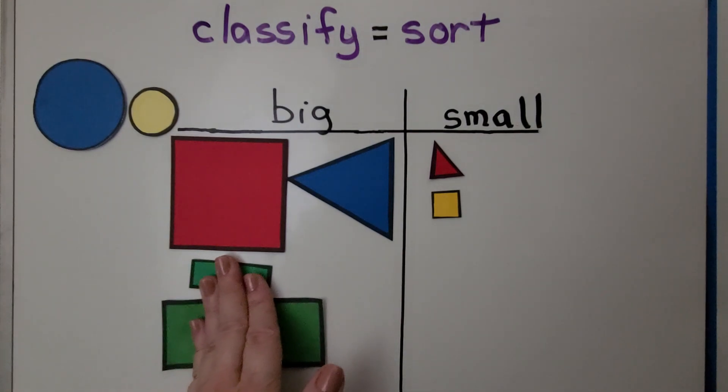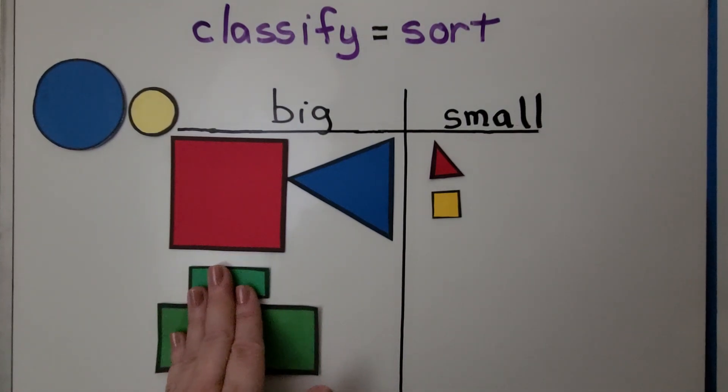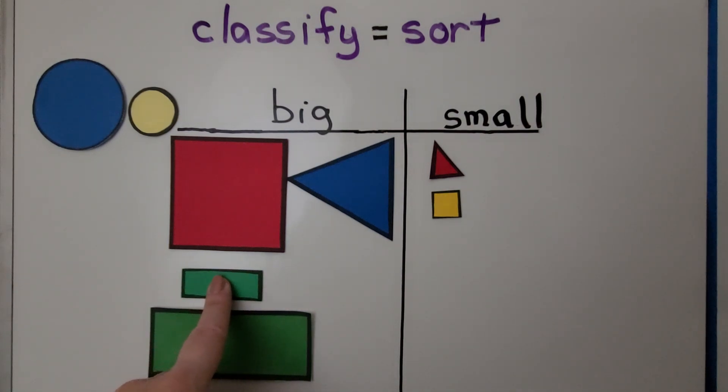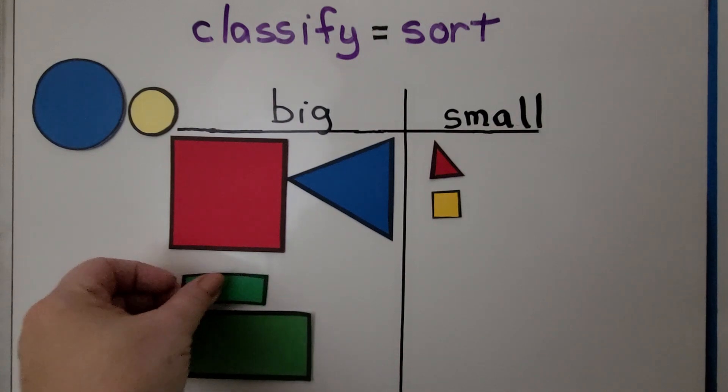Look at these rectangles. Which side should this rectangle go on? Compare its size to this one. If you said this is the small rectangle you're right.